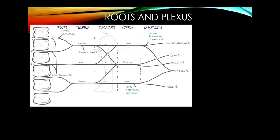Moving up to roots and plexus: the clavicle overlies the division when arms are at the side. Trauma above the clavicle causing arm weakness means the lesion is of the trunks. Below the clavicle suggests cord plexopathy or terminal nerve damage. Radiculopathy — especially in younger individuals — is often due to disc herniation, causing shooting electrical pain in the involved dermatomal distribution.